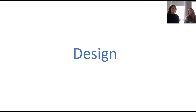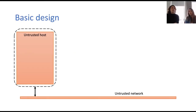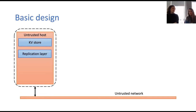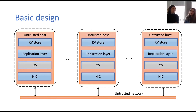The basic design of a distributed in-memory key-value store has a local key-value store in every node and a replication layer which provides scalability and availability. This key-value store communicates over the operating system and the network with other nodes. But the host and the network are not necessarily trusted — an attacker can compromise the network traffic and also tamper with the protocol execution.